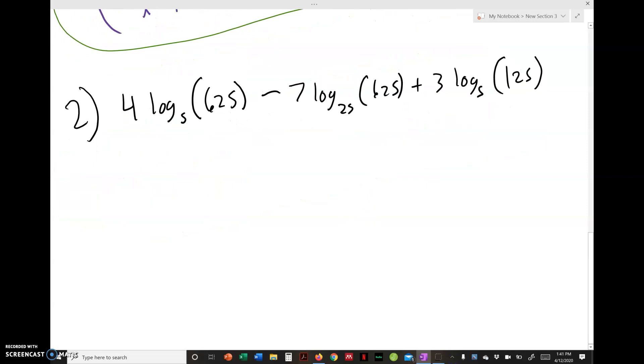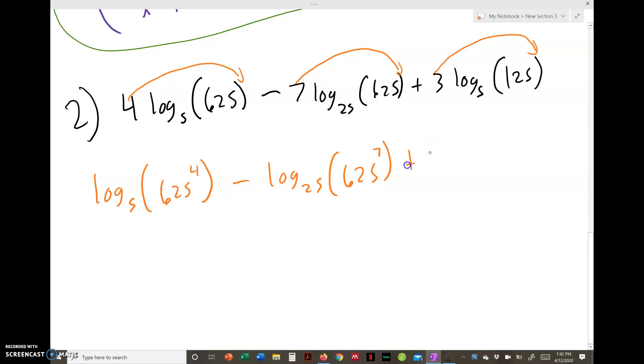Looking at another one. Same thing, write it as a single log and simplify. So we got 4 log base 5 of 625, minus 7 log base 25 of 625, plus 3 log base 5 of 125. With this one there are multiple ways. You could condense and then simplify, or you can simplify and then condense. Either way. Let's keep with the condensing.